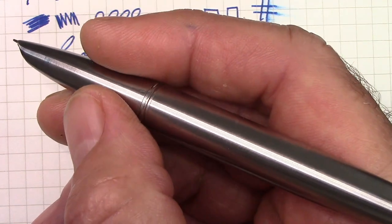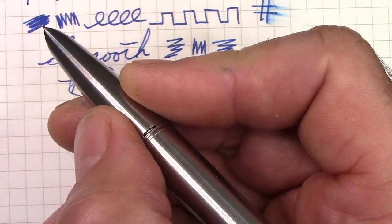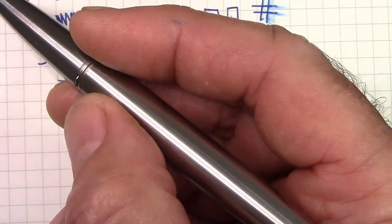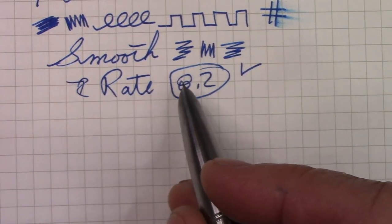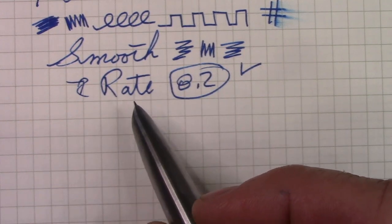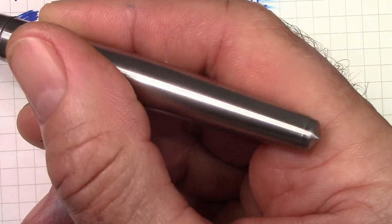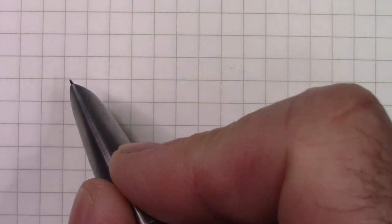But for one-third the price, you could get a 601 and have an equally good writing experience, and you can get one mostly made out of metal. So there's a lot of options, and to me the value of this pen just isn't there for me.